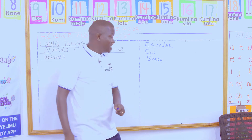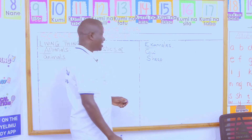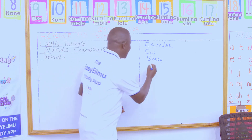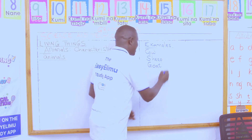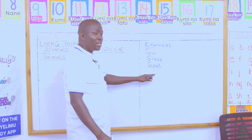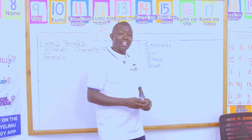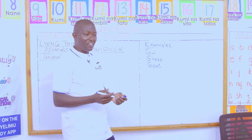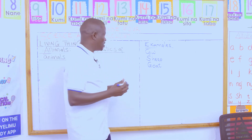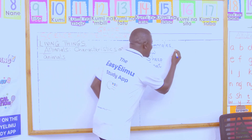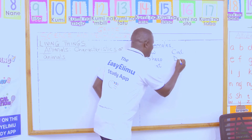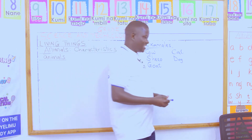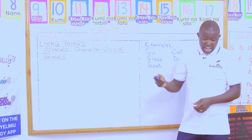What about you Jane? Jane said: we have goat. Goat is another example of an animal found in our grandmother's farm. And also, I the teacher will mention one — we have cats and dogs. These are some of the animals that we find in our homes.